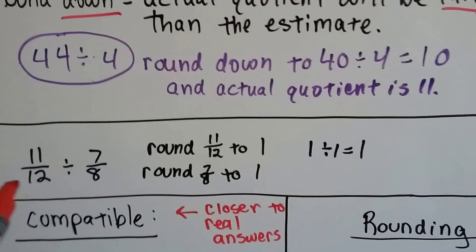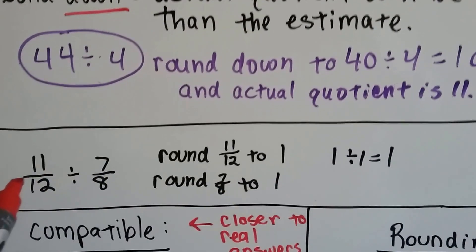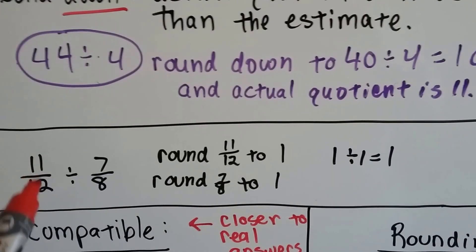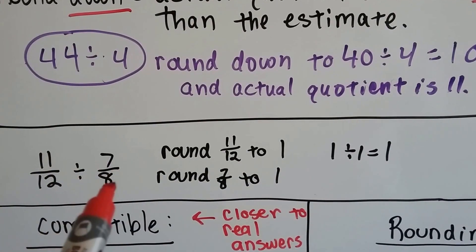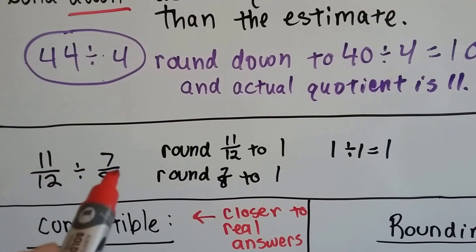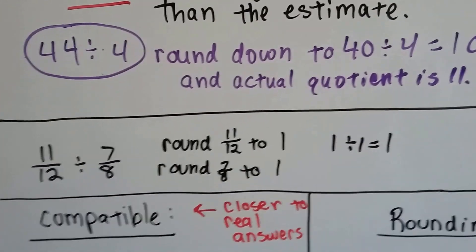Sometimes when we do the estimations, we can end up with whole numbers that are real easy, like eleven-twelfths divided by seven-eighths can be rounded to a one and a one. One divided by one is one.